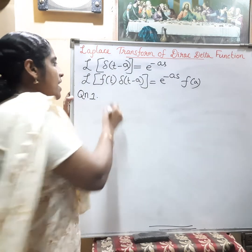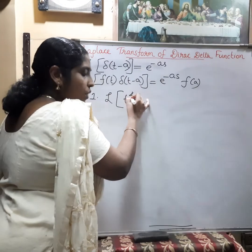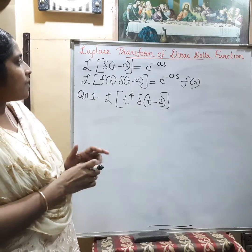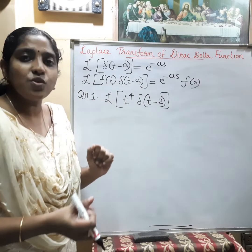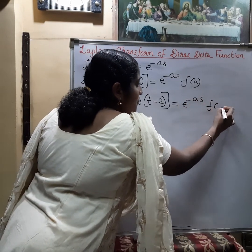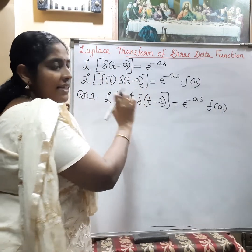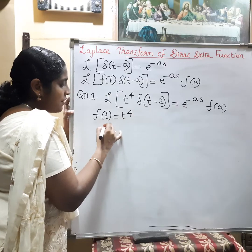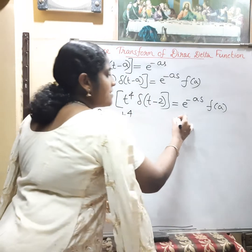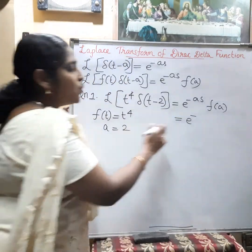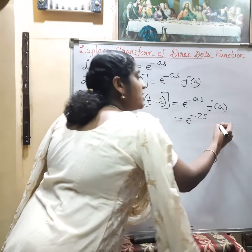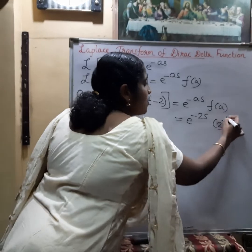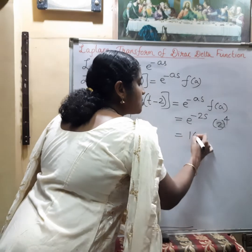Question 1: Find the Laplace transform of t⁴·δ(t−2). Using the formula, the Laplace transform of f(t)·δ(t−a) = e^(−as)·f(a). Here, f(t) = t⁴ and a = 2 (from δ(t−2)). So the answer becomes e^(−2s)·f(2) = e^(−2s)·(2⁴) = e^(−2s)·16. Therefore, the Laplace transform is 16·e^(−2s).